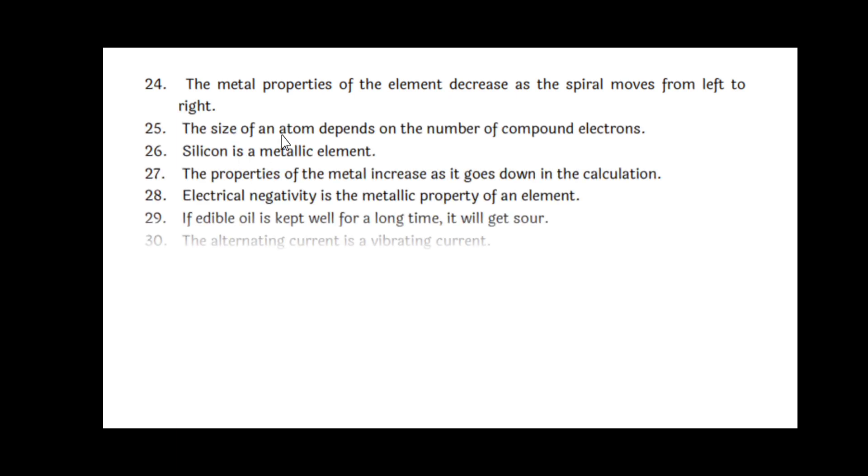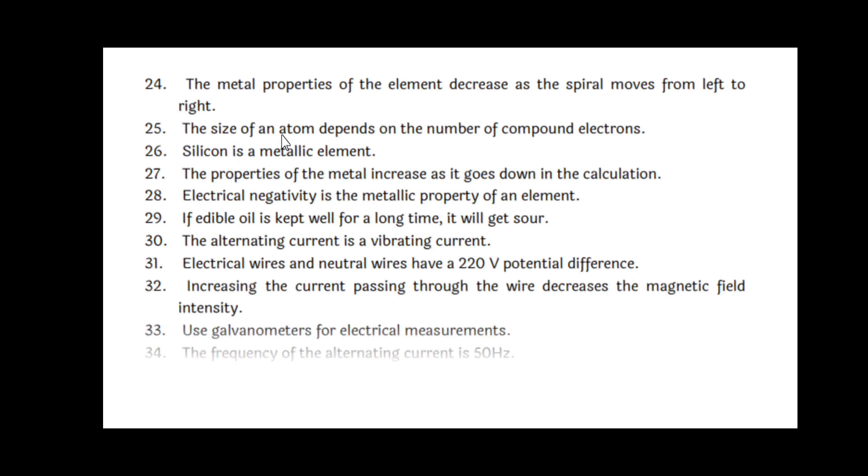The metal properties of the elements decrease as the period moves from left to right. Right. The size of an atom depends on the number of compound electrons. Wrong. Silicon is a metallic element. Wrong. The properties of the metals increase as it goes down in the group. Right. Electrical negativity is the metallic property of the element. Wrong.